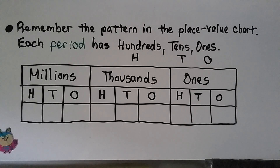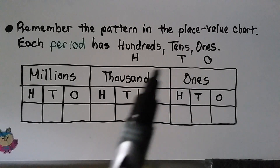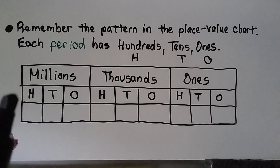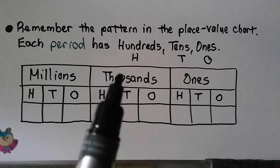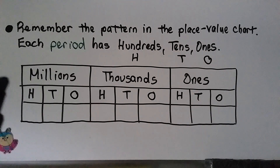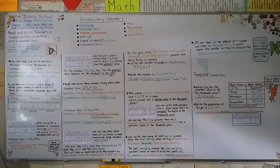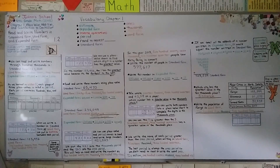Remember the pattern in the place value chart: each period — the ones, thousands, and millions — has hundreds, tens, ones, often abbreviated HTO. We go from the ones period to the thousands period to the millions period, and it keeps going further to the left. In our next lesson, 1.3, we're going to compare and order numbers using less than, greater than, and equal to symbols.